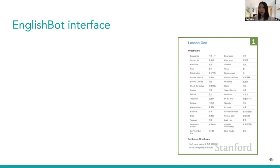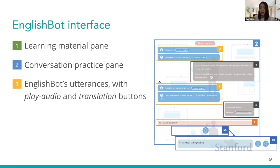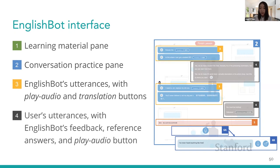Now I'll walk through each component of EnglishBot. There is a learning material pane comprised of two sections: vocabulary and sentence structures, designed to assist users in completing the conversation with the chatbot. The conversation practice pane serves as a major learning window where most learning actions and interactions take place. EnglishBot's dialogue bubbles consist of chatbot utterances, and the chatbot comes with an audio play button to replay English sentences and a translation button to translate English sentences into Chinese.